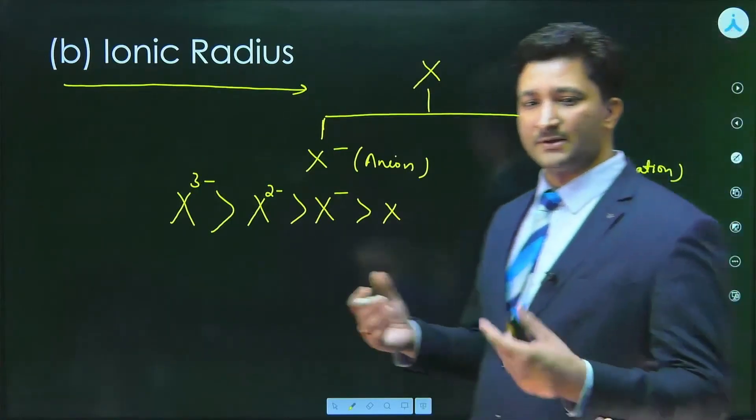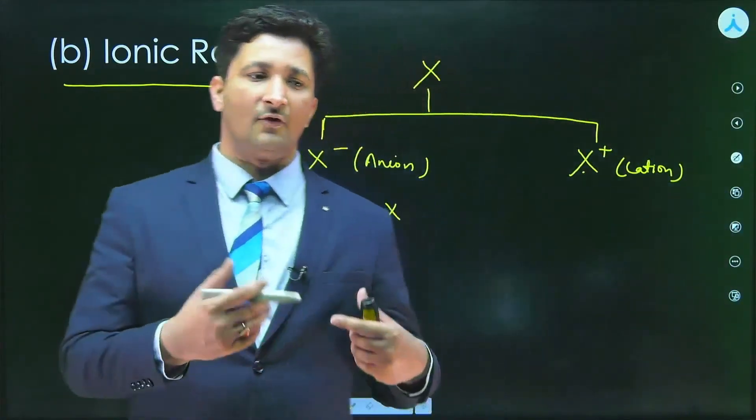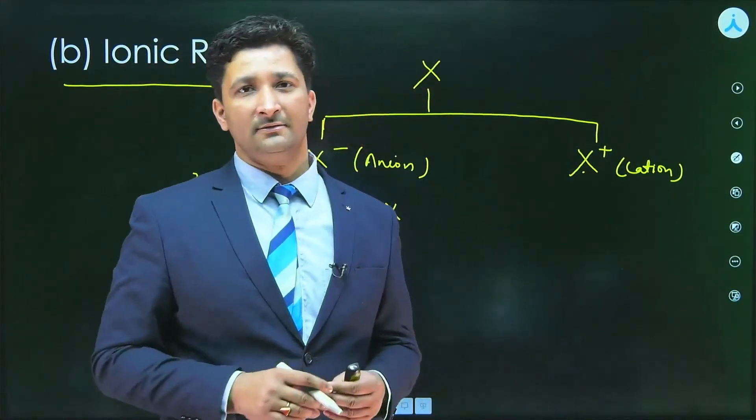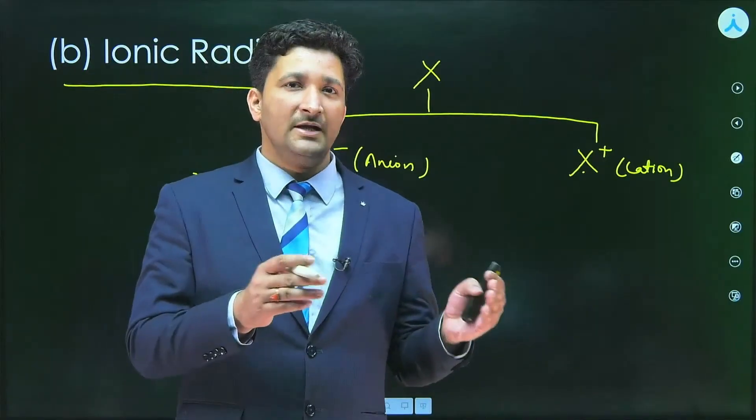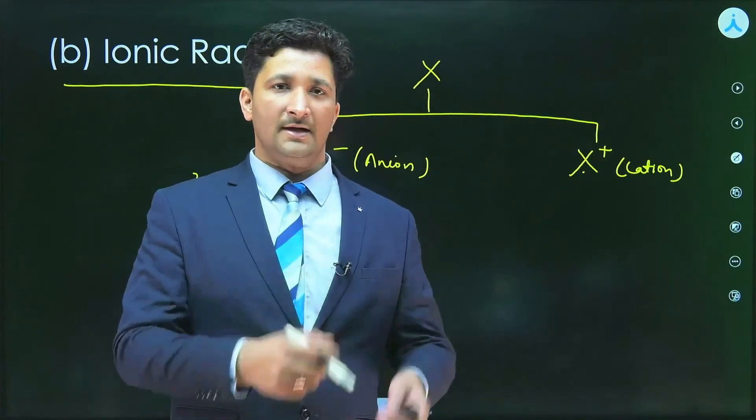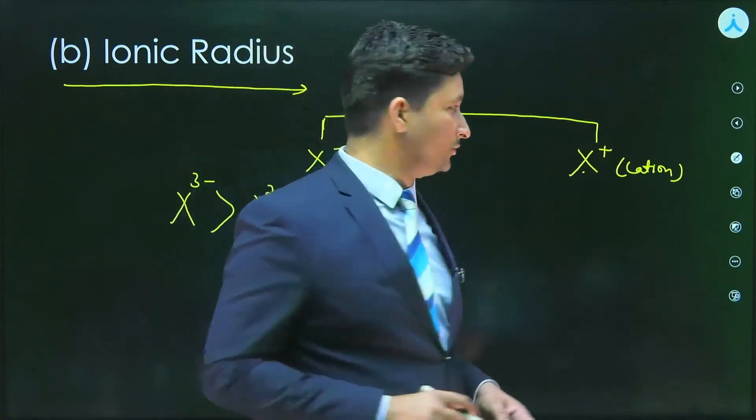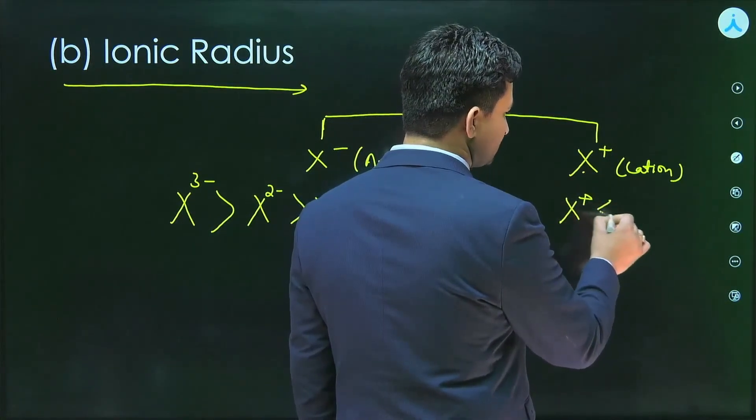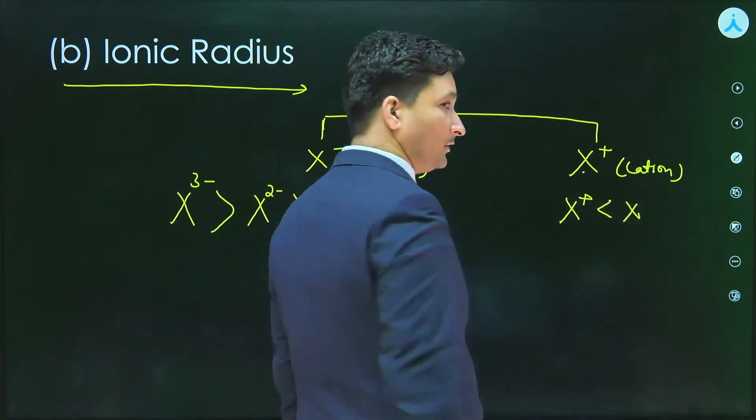Now suppose some other element is there and it forms cation by loss of electrons. Once the electrons are lost, the electron-electron repulsion will decrease and nucleus will become stronger. So more attraction will be there and this will lead to decrease in size. X plus will be smaller than X.